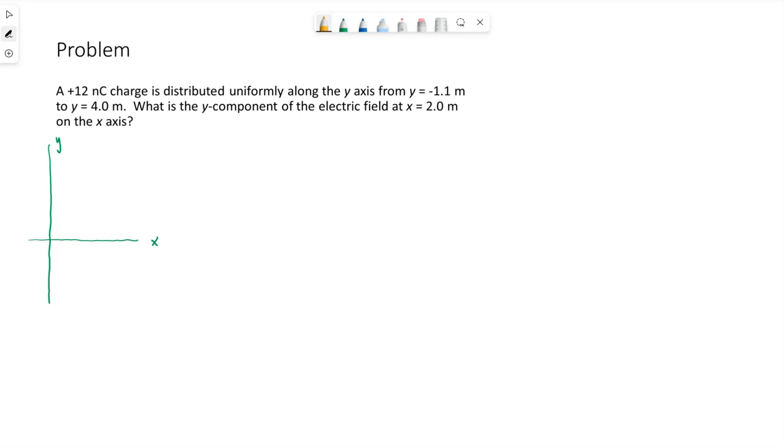It tells us the charge is distributed uniformly. So that means everywhere between y equals negative 1.1 meter to y equals 4.0 meters has some of this charge.